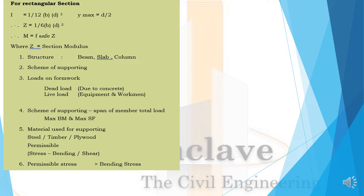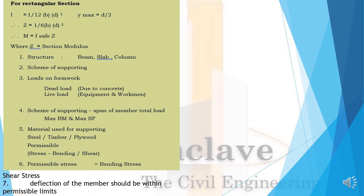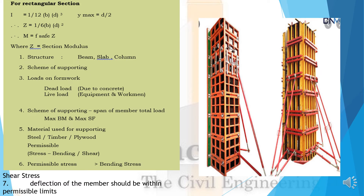The design steps continue: scheme of supporting — span, member total load, that is maximum bending moment and maximum safe bearing. Material used for supporting: steel, timber, plywood. Permissible stress: bending divided by shear — permissible stress must be greater than the bending stress and shear stress. Deflection of the member should be within the permissible limits. Here, a column formwork image has been shown.